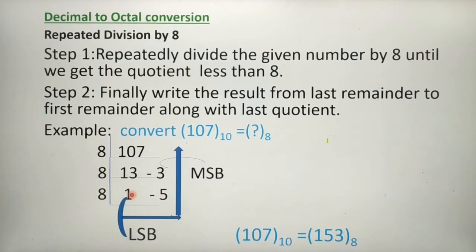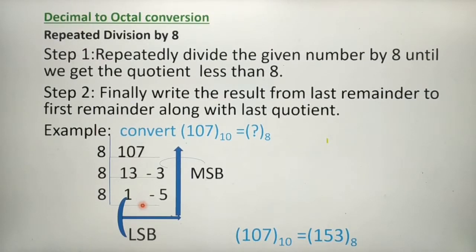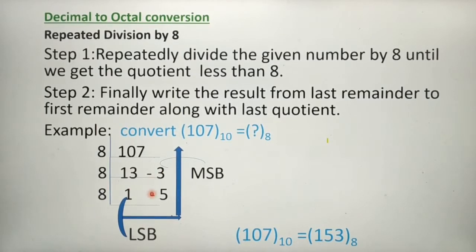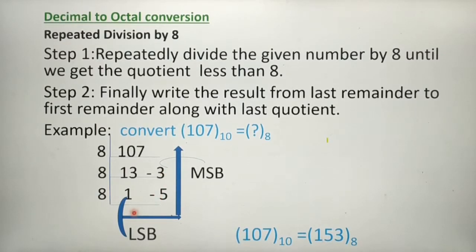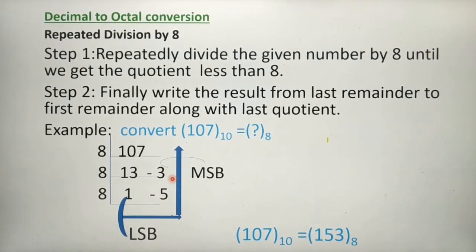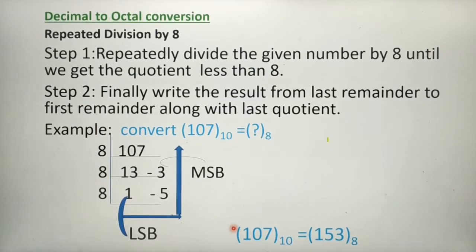Now check whether the new quotient 1 is less than 8. Yes, it is less than 8, so we can stop the process and write the result. We write from bottom to top: first write the last quotient value 1, then the last remainder 5, then the first remainder 3. So 153 is the octal value for decimal number 107.